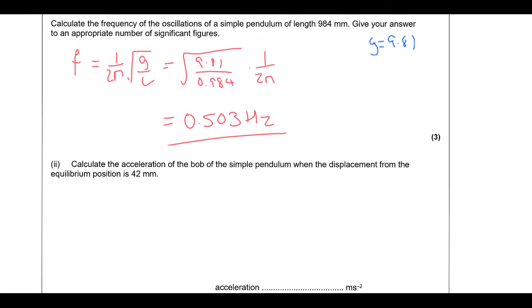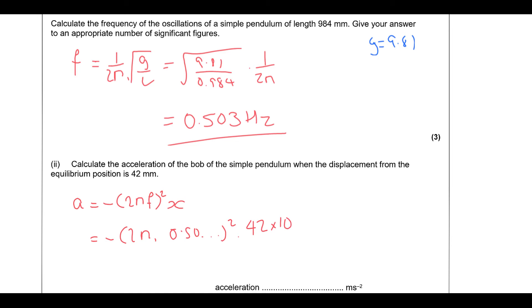Calculate the acceleration of the bob when it is displaced 42 mm from equilibrium. The equation needed is a = -(2πf)²·x. Using the unrounded frequency of 0.503... Hz, squared, times 42 × 10⁻³ m, we get −0.42 m/s². We have a positive displacement and a negative acceleration, which is a good check that we're getting the right answer.